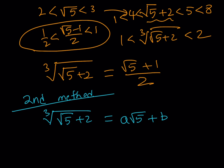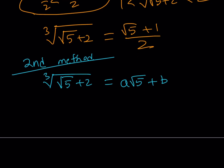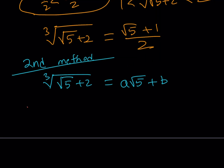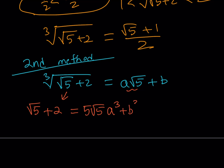The next step is cubing both sides. Cubing the left side gives √5 + 2. For the right side, cubing A√5 + B using our formula: the cube of A√5 gives 5√5·A³, plus B³, plus 3AB·√5 multiplied by (A√5 + B).